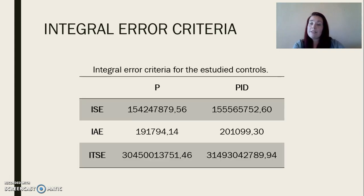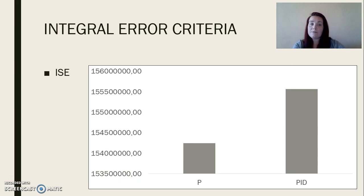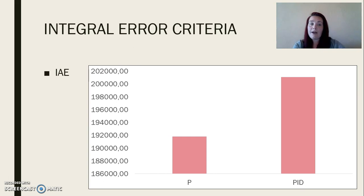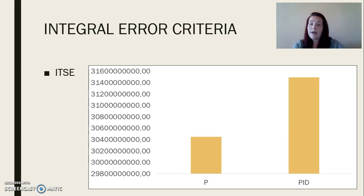The errors for each type of controller were read and the criteria shown in the table were calculated. In order to compare the integral error criteria, the graphs are shown in the pictures for ISE, for IAE, and for ITSE.